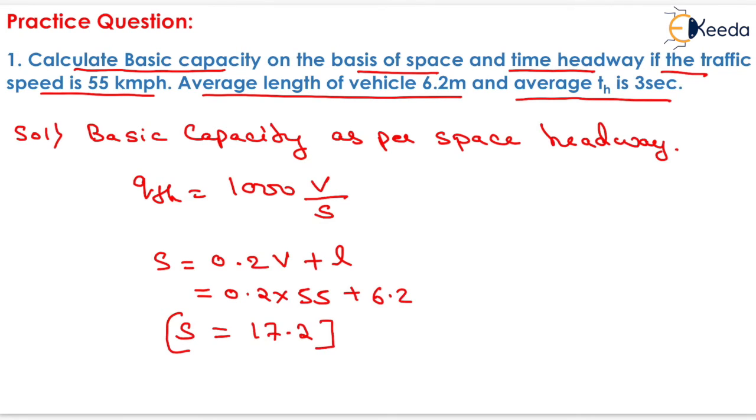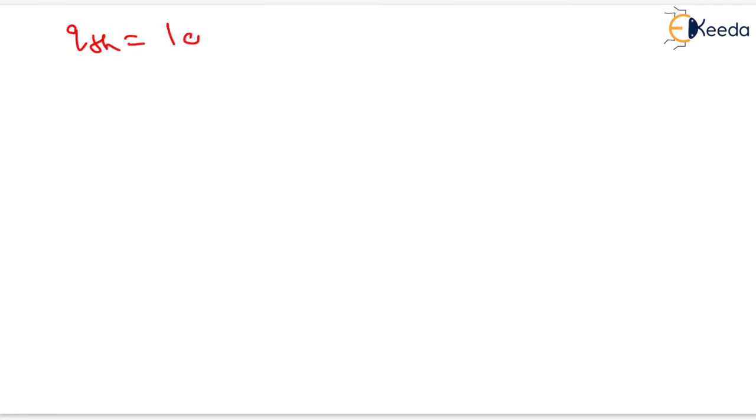Now, we can calculate the value of q theoretical equals to 1000 into 55 divided by 17.2. On solving this that is 1000 into 55 divided by 17.2 it will be equals to 3197.67 vehicles per hour.